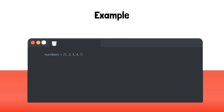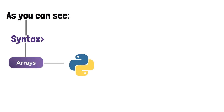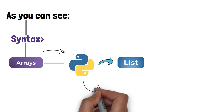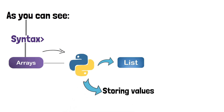Here's how you can declare an array in Python. As you can see, the syntax for declaring an array in Python is similar to that of a list. However, arrays in Python are limited to storing values of the same data type.